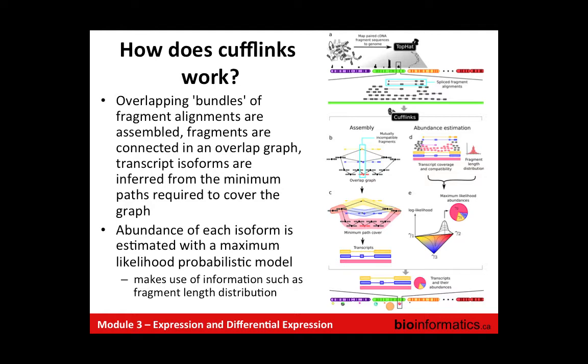Cufflinks can work without any known transcript annotations — that's the de novo mode. It will define your transcriptome as best it can from your data. If you have 100 samples, you could do it with as much data as possible to get a complete picture of all transcripts across your population, then use that as custom annotations and go back to estimate expression sample by sample.